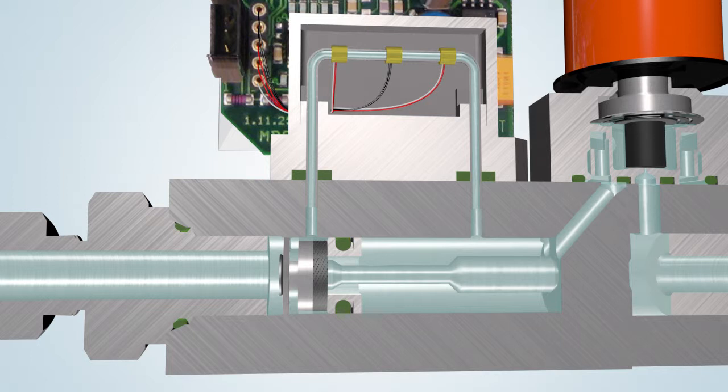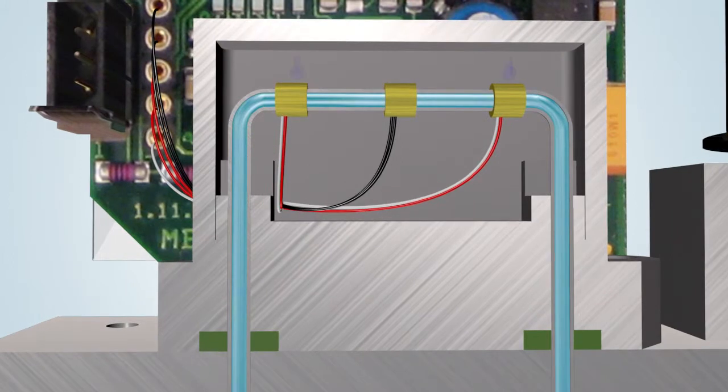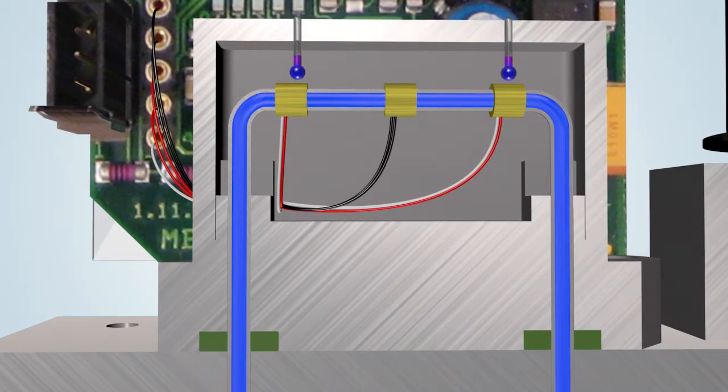Once the instrument has been connected to the process line, the pre-pressure can be set. The body and the sensor are now filled with gas. The sensor consists of a thin capillary tube fitted with a heater and two temperature recorders. The heater heats the tube.